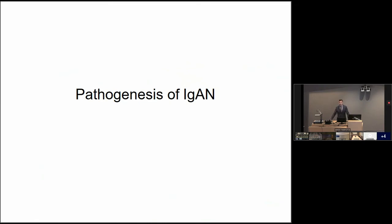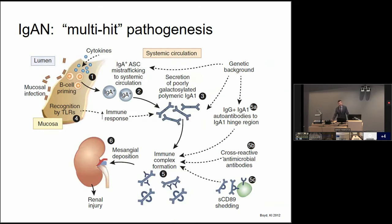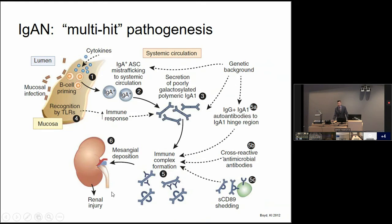Now let's take a brief review of the pathogenesis of IgA nephropathy. The current understanding involves a multi-hit hypothesis. The first hit is abnormal immunity within the mucosal immune system, possibly due to stimulation from mucosal infections or antigens mediated through toll-like receptors. B-cells get primed and, instead of returning to the enteric mucosa, set up in systemic sites — probably the bone marrow — and secrete galactose-deficient IgA1 molecules into the circulation. The second hit is formation of anti-glycan antibodies against those molecules, creating large immune complexes that deposit in the kidney. The third hit is that you need a renal injury response to those immune complexes — the sum total producing IgA nephropathy.